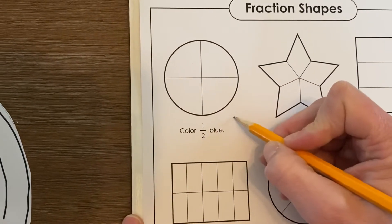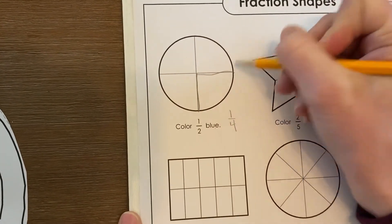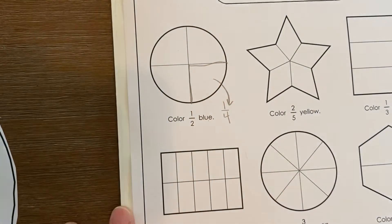That pizza is cut into fourths. If you ate this wedge right here, you would be eating one-fourth of the pizza.